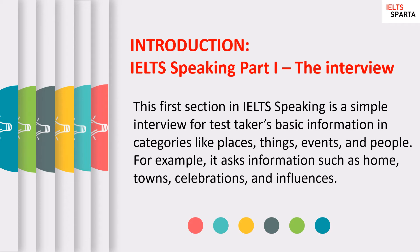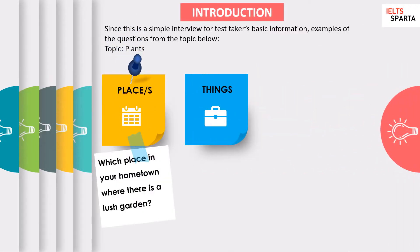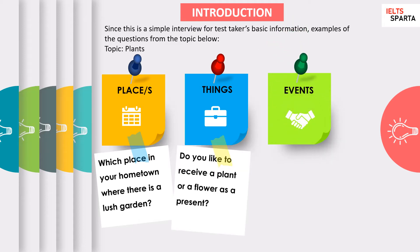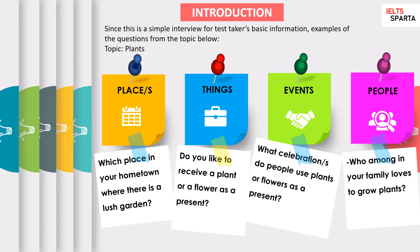Since this is a simple interview for the test taker's basic information, example questions fall into four categories: first, questions about places; second, questions about things; third, questions about events; and fourth, questions about people. For example, during the interview the examiner may ask you about which place in your hometown has a lush garden.